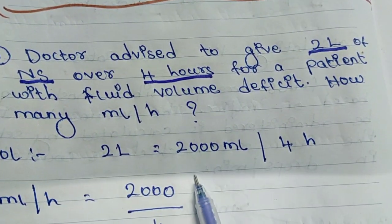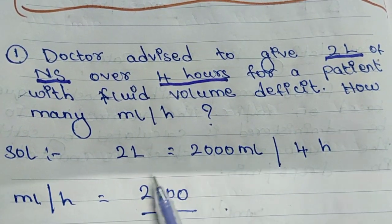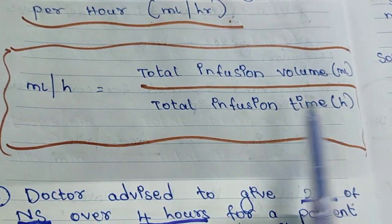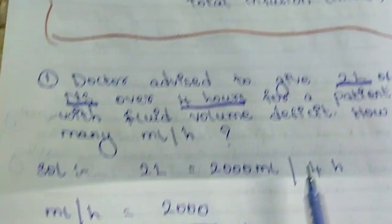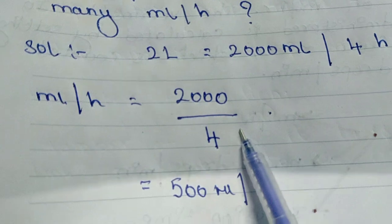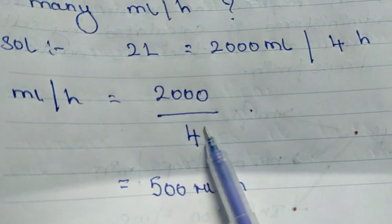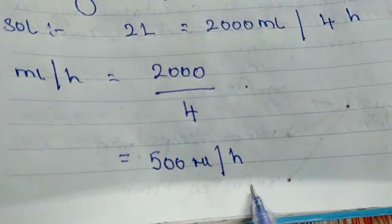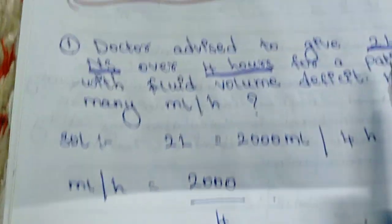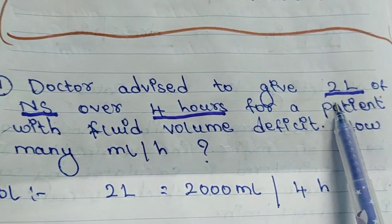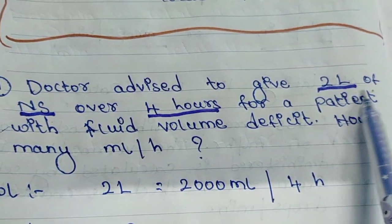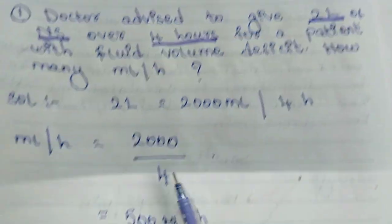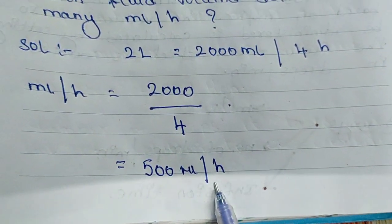2 liters is 2000 ml, because 1 liter is 1000 ml. Applying the formula — total infusion volume divided by total infusion time — it is 2000 divided by 4, which gives 500 ml per hour. So if the doctor has advised 2 liters of NS over 4 hours for a patient in hypovolemic shock for fluid resuscitation, you have to administer 500 ml in 1 hour.